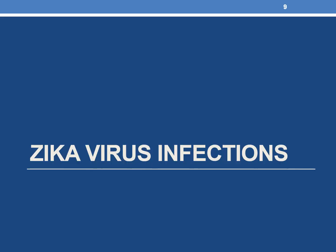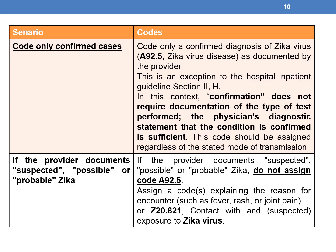Now, Zika virus infections. There are two guidelines for Zika virus. Guideline 1 — Code only confirmed cases: Assign code A92.5 (Zika virus disease) only for a confirmed diagnosis as documented by the provider. For inpatient admissions, an exception applies per section 2H — confirmation does not require documentation of the type of test performed; a simple physician diagnostic statement that the condition is confirmed is sufficient.